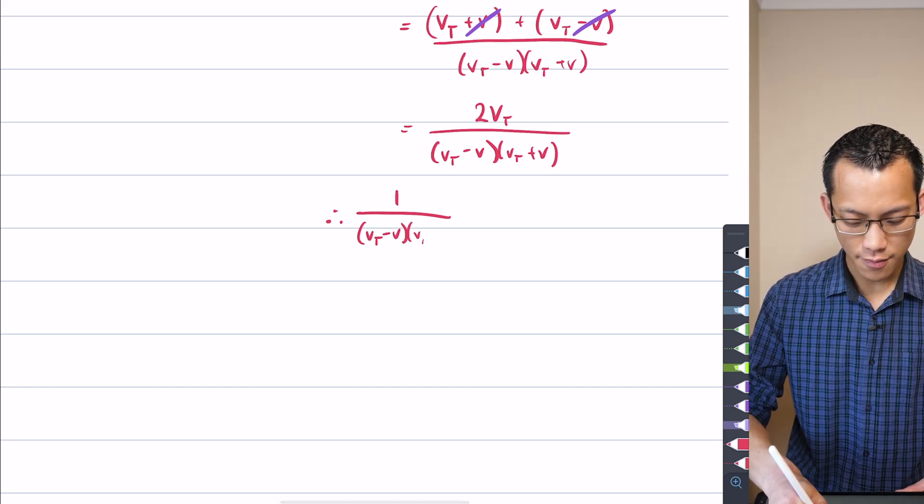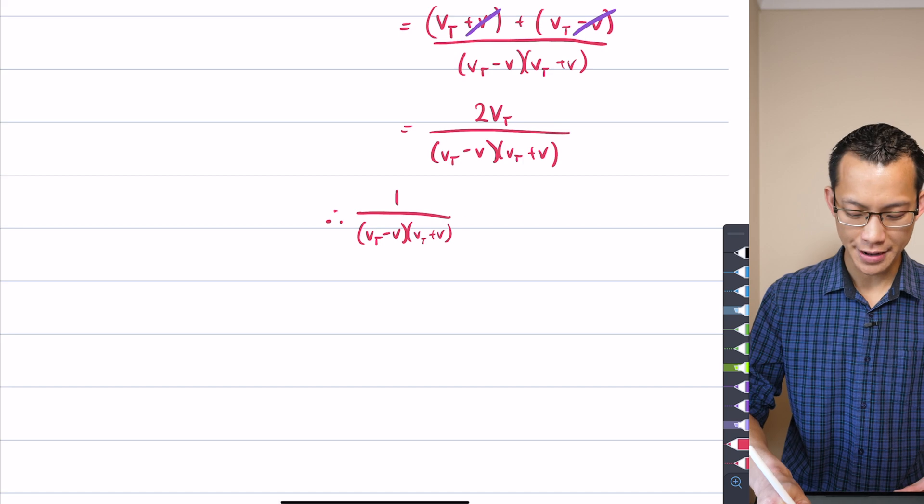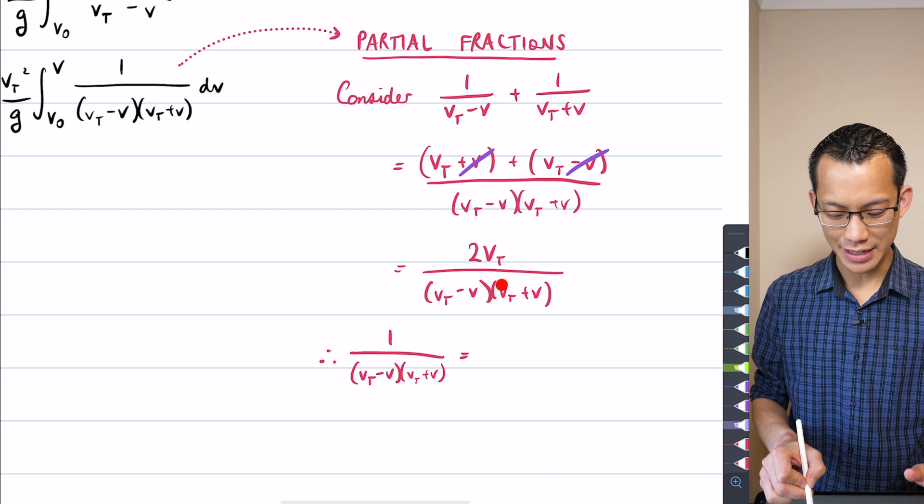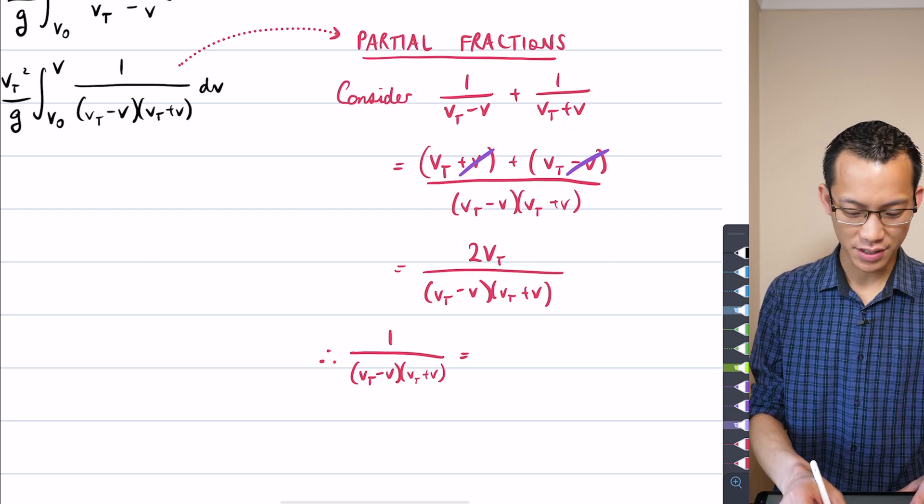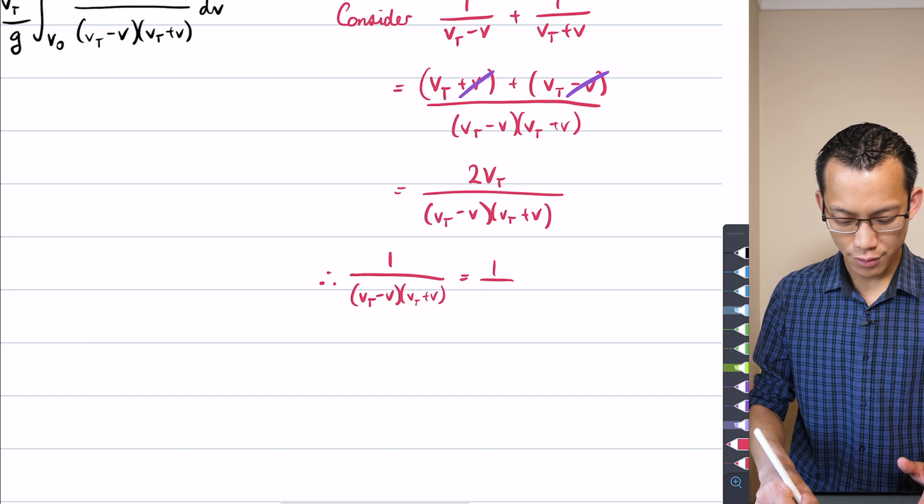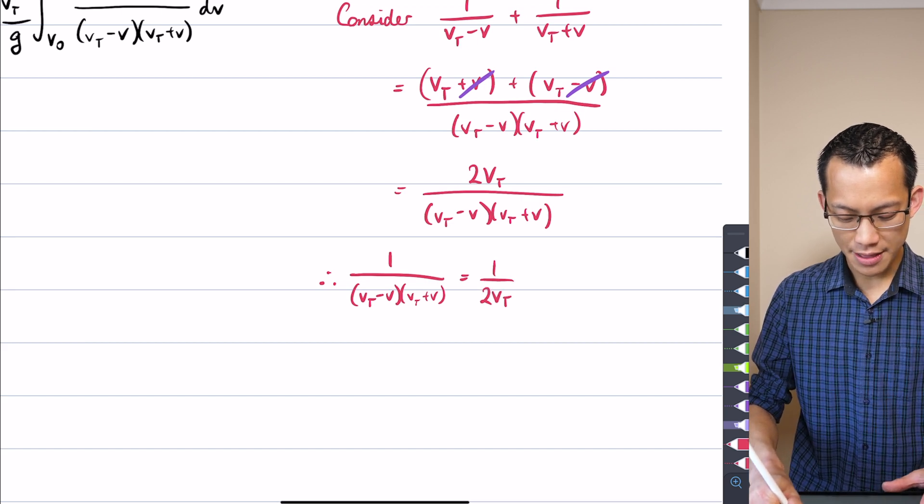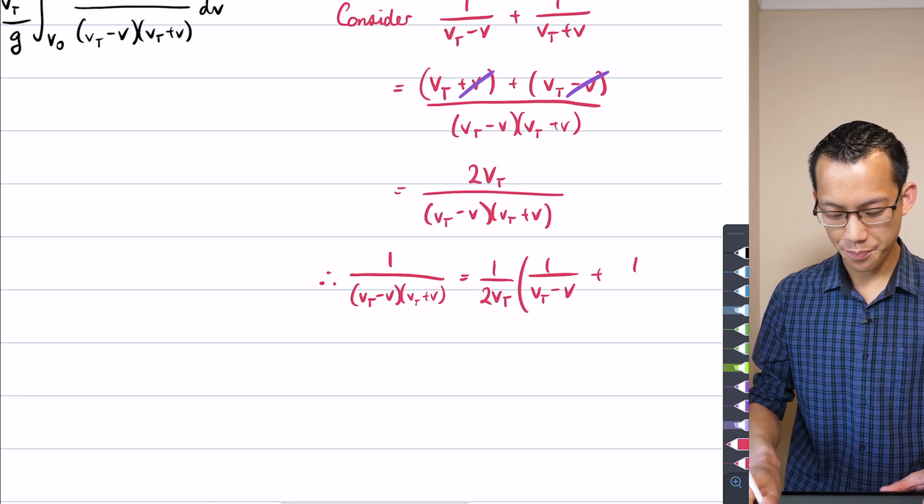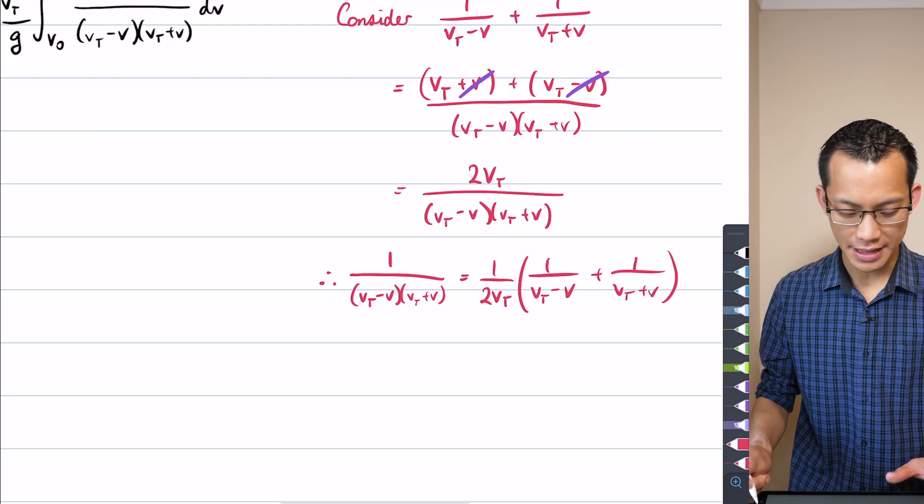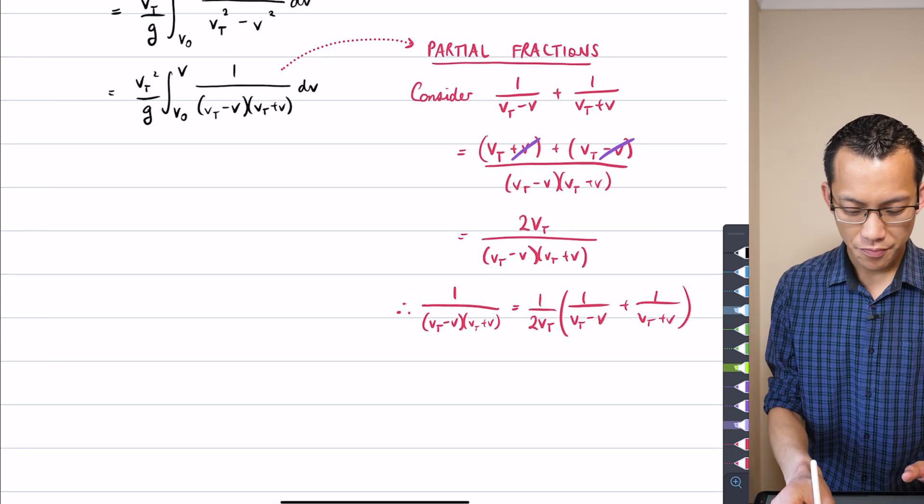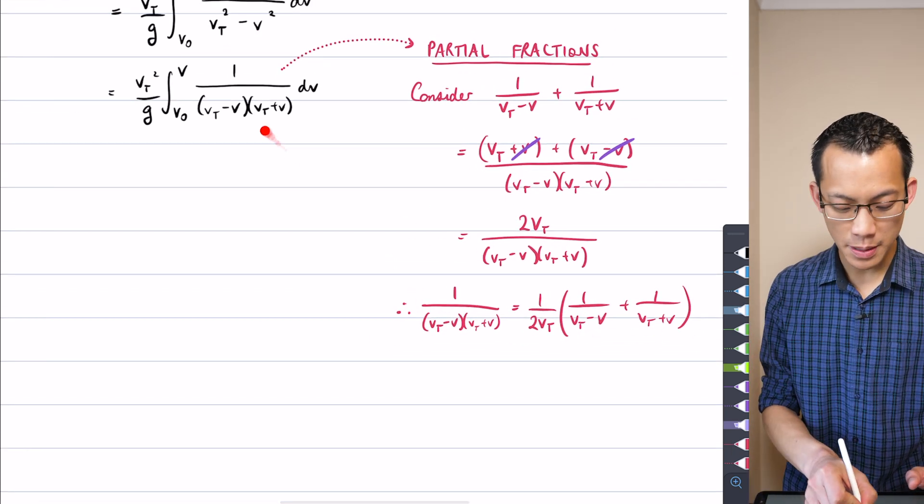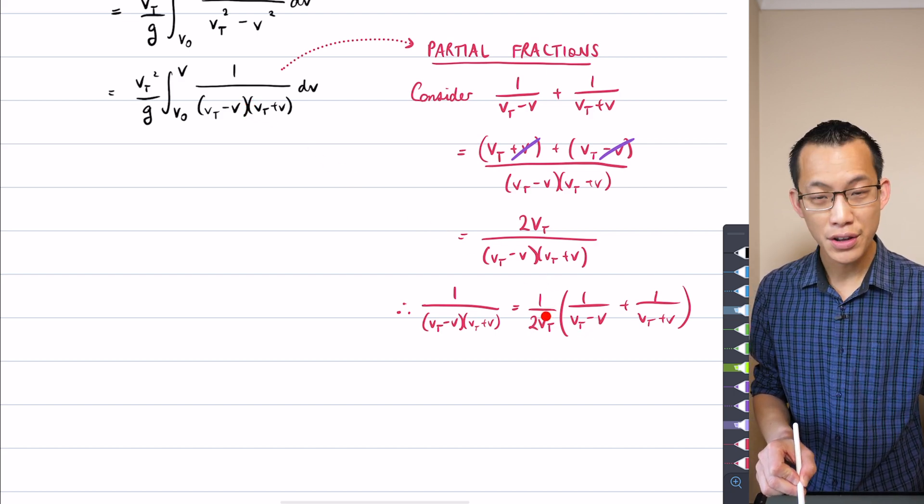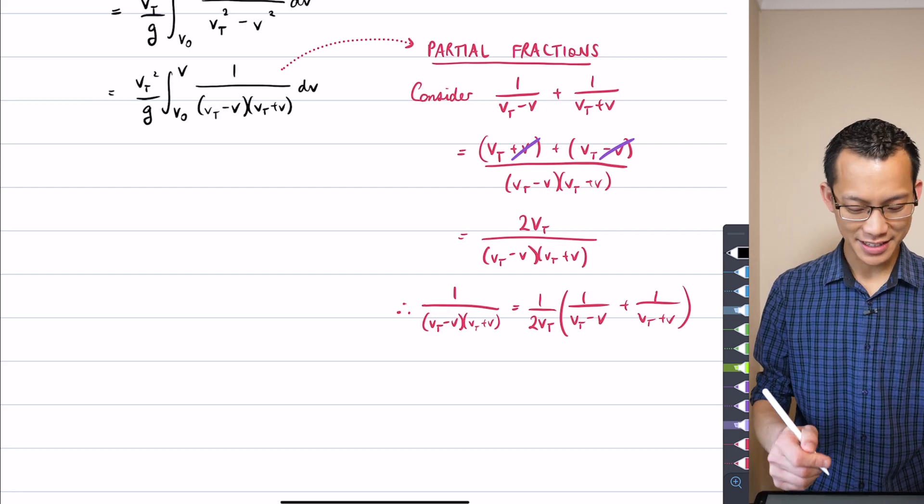So I'm going to say here, therefore, if I divide through by 2VT, that gives me a 1 on the numerator, a VT minus V, VT plus V on the denominator, and if I divide through the right-hand side here by 2VT, I just have to divide this left-hand side by 2VT. You can see this here is what appears in my integrand, so I just need to introduce this factor of 1 on 2VT in there. So are you ready? Let's do that.